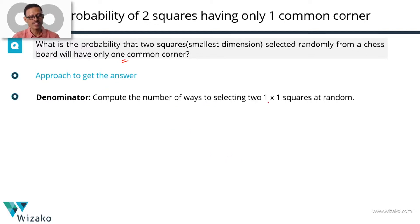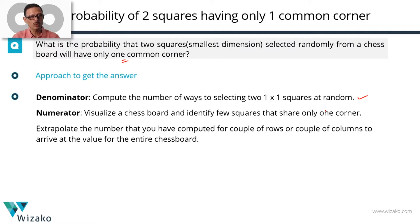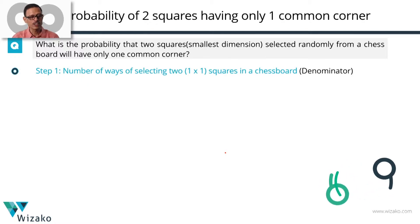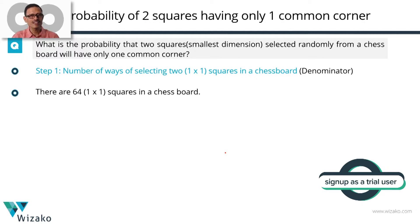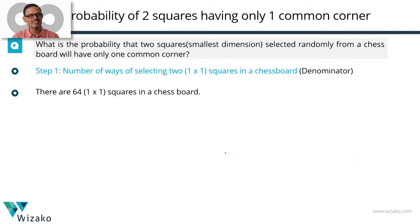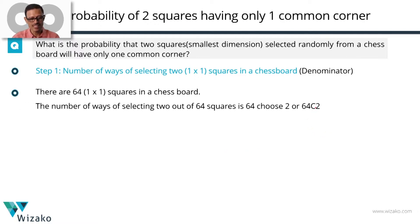For the denominator, we count the number of ways of selecting two one-by-one squares. How many one-by-one squares does the chessboard have? It's got 64 — eight rows, eight columns, eight into eight equals 64. We select two one-by-one squares out of these 64, which can be done in 64C2 ways. So the denominator is found — that's the easiest part in this question.